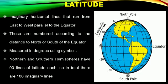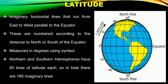Coming on to the Latitude lines. Latitude lines are the imaginary horizontal lines that run from East to West, parallel to the Equator. These are numbered according to the distance to North or South of the Equator. It is also measured in degrees. Northern and Southern Hemispheres have 90 lines of latitude each, so in total there are 180 imaginary latitude lines.